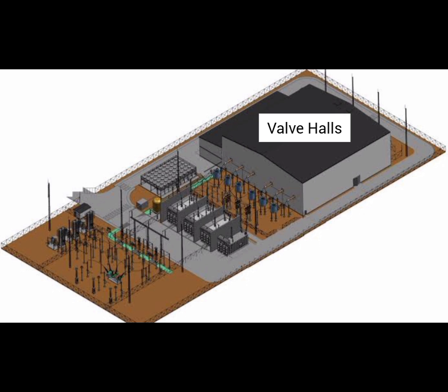Valve halls house the power electronic devices such as thyristors and IGBTs that convert AC to DC or vice versa. They are typically arranged in a modular fashion, with each module containing a set of valves and associated cooling systems.